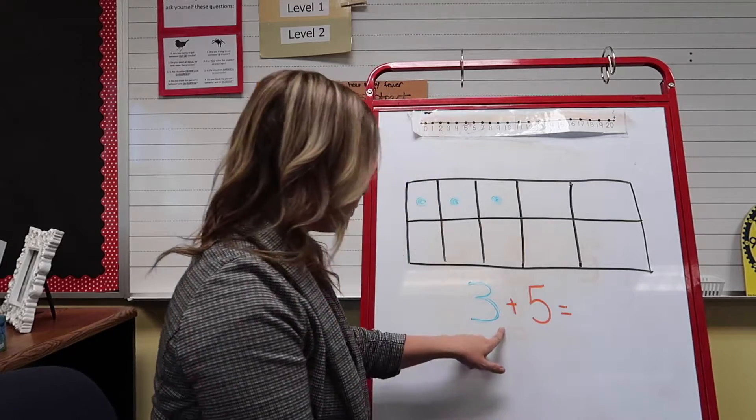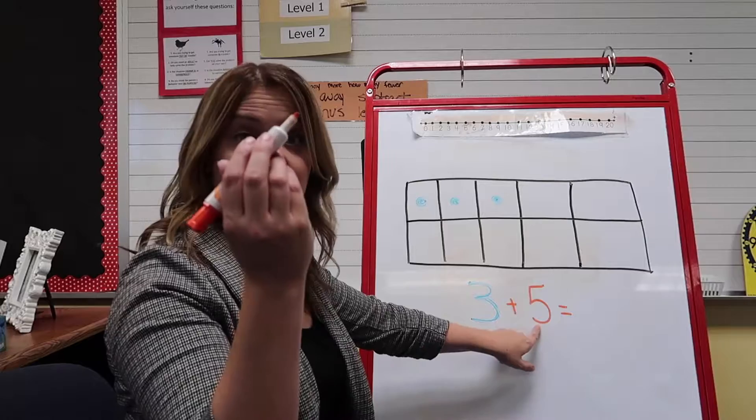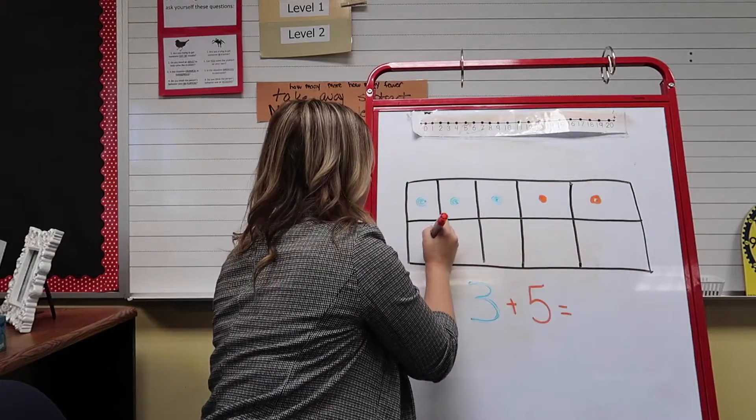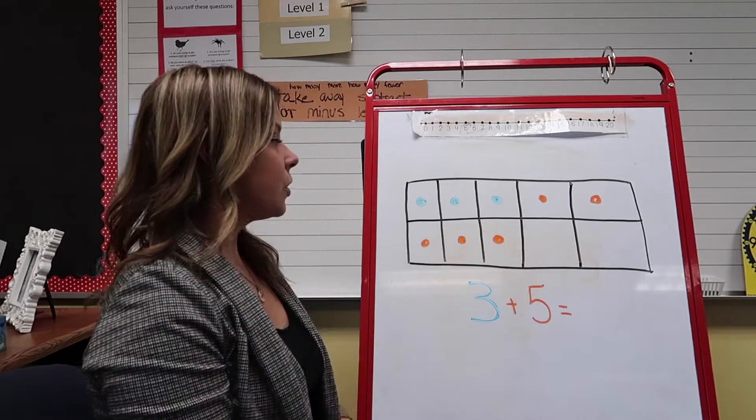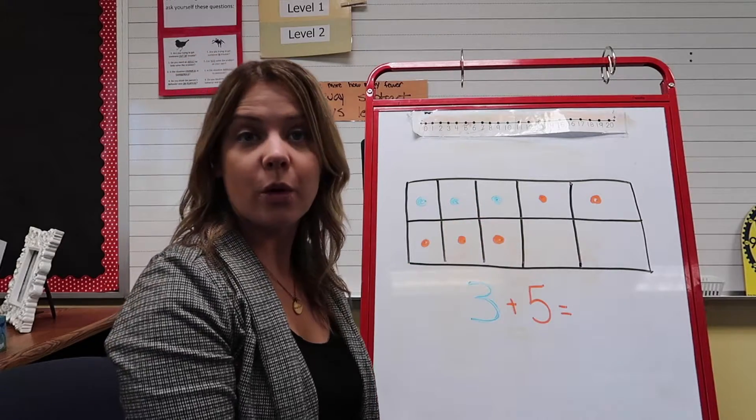And then we will do 5 in orange. We'll do 5 orange dots. Here we go. Ready? 1, 2, 3, 4, 5. So now we've got our 3 blue dots and we've got our 5 orange dots.